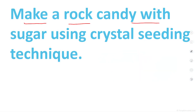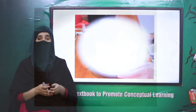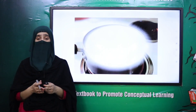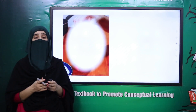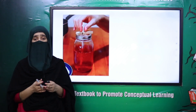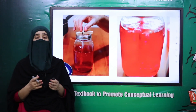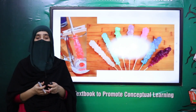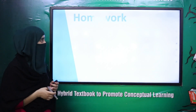Next is: make a rock candy with sugar using crystal seeding technique. Hainne rock candy banana sikhi — kis tarah se sugar ko lete huwe, as a seeding technique, hain crystals banate hain sugar ki from the solution of sugar and water. Crystallization hain kisi bhi solute ki bana sakte hain. Hainne rock candy banana sikhi by the process of crystallization — kis tarah se evaporation ke process se solvent ko alag kiya aur jo solute hai uski crystals banain.